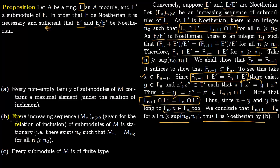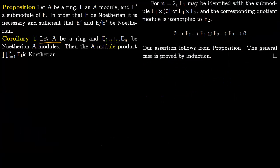Condition B states that every increasing sequence Mn for n greater or equal to 0 under inclusion of submodules of E becomes stationary — we have shown Fn equals Fn+1 so this holds. Now let A be a ring and E1, E2, up to En be Noetherian A-modules; then their direct product is also Noetherian.